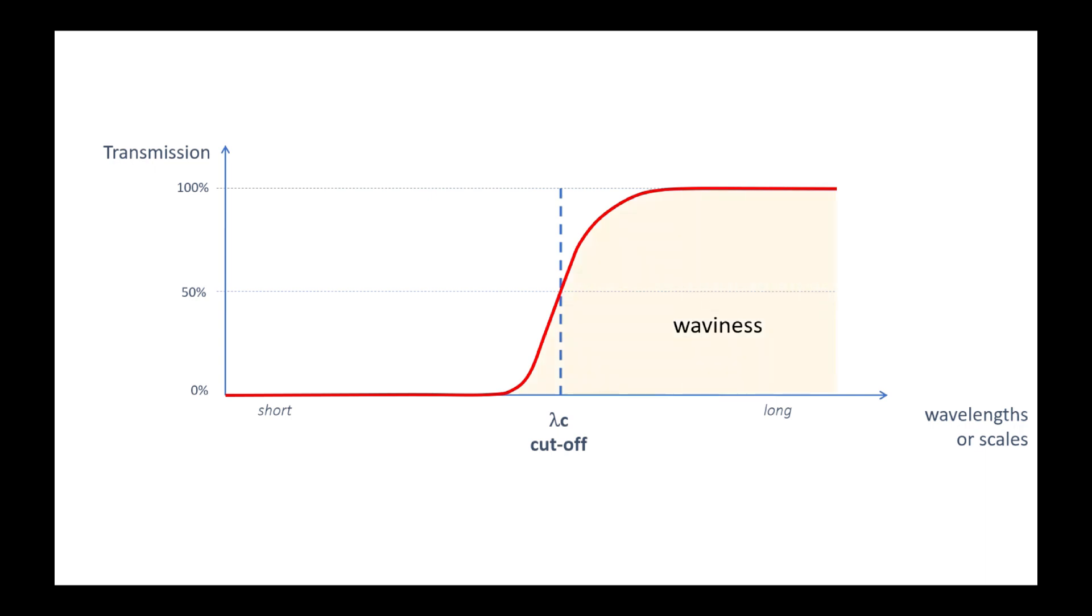Waviness, therefore, mainly contains longer wavelengths than the cutoff. As explained before, the roughness is then obtained by subtracting the waviness from the primary profile, which will then contain the shorter wavelengths.